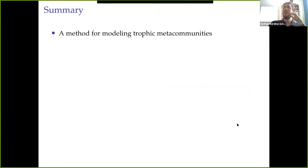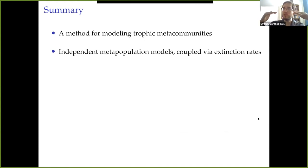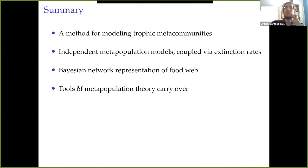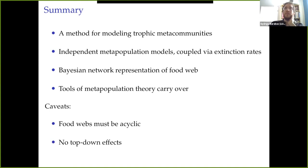I will wrap up now. So in summary, we have a method for modeling trophic metacommunities that starts out from a bunch of independent metapopulation models for each of the species, and then they're coupled through their extinction rates in the metapopulation models. And those extinction rates are calculated using a Bayesian network representation of the food web. And we can use various tools of metapopulation theory that carry over here, for example, classifying patches based on their value, for example, using metapopulation capacities to determine whether species have gone extinct or not. And the method comes with caveats. Those should be kept in mind. The food webs have to be acyclic, and we cannot model top-down effects this way. With that, thank you very much for your attention. My apologies for running slightly over time, and I'm happy to take your questions.